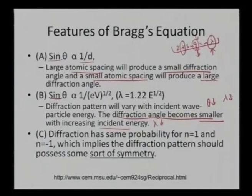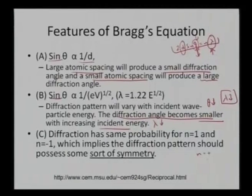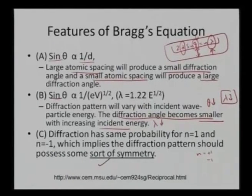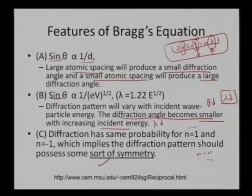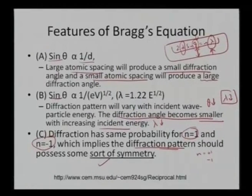That is the direct dependence of θ on energy or wavelength. At the same time, if I keep n as either +1 or −1, this law remains valid, showing some symmetry which is incorporated for different values of n. Diffraction has the same probability whether n = +1 or n = −1, so the diffraction pattern automatically incorporates symmetry.